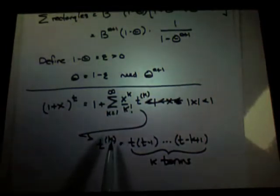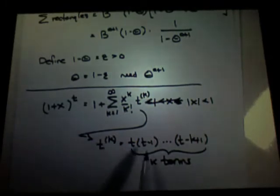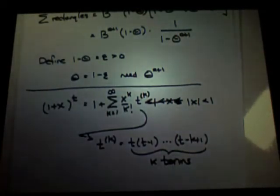And t to the one factorial power is t. T to the two factorial power is t times t minus one, it's not t squared. T times t minus one, lose one each time.